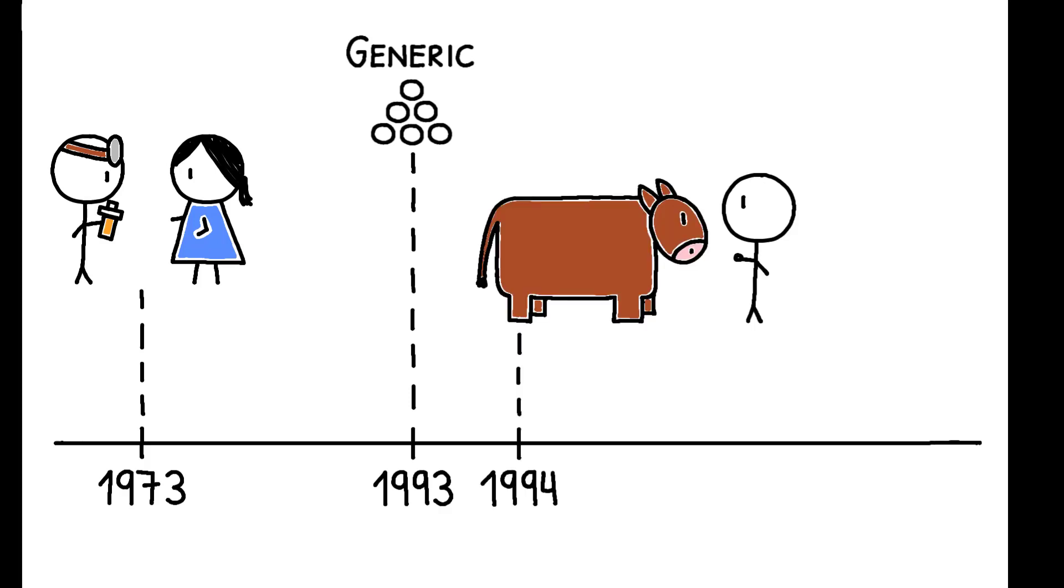Indian farmers began using diclofenac to treat their livestock in 1994, and it wasn't until 2004 that research revealed vultures would develop kidney failure and die within weeks of digesting carrion with even trace amounts of the drug.